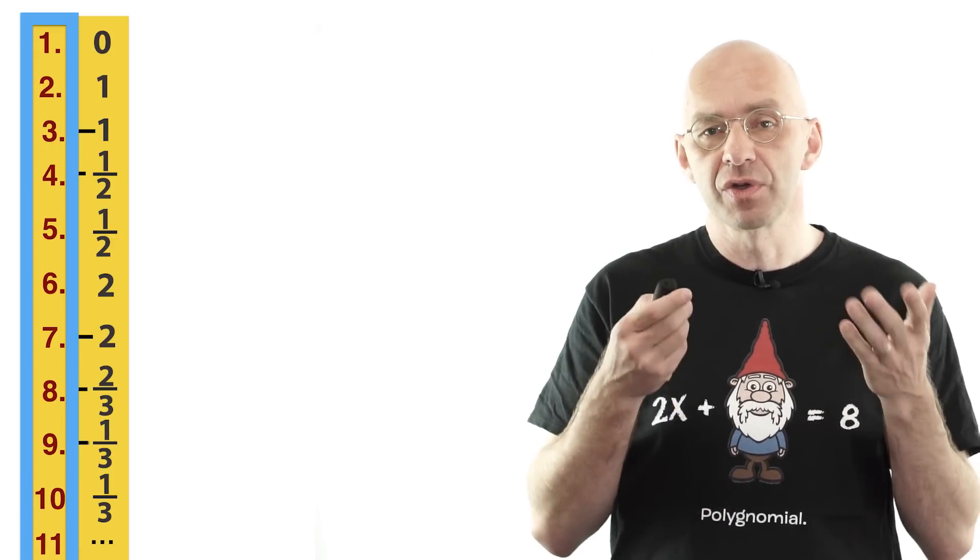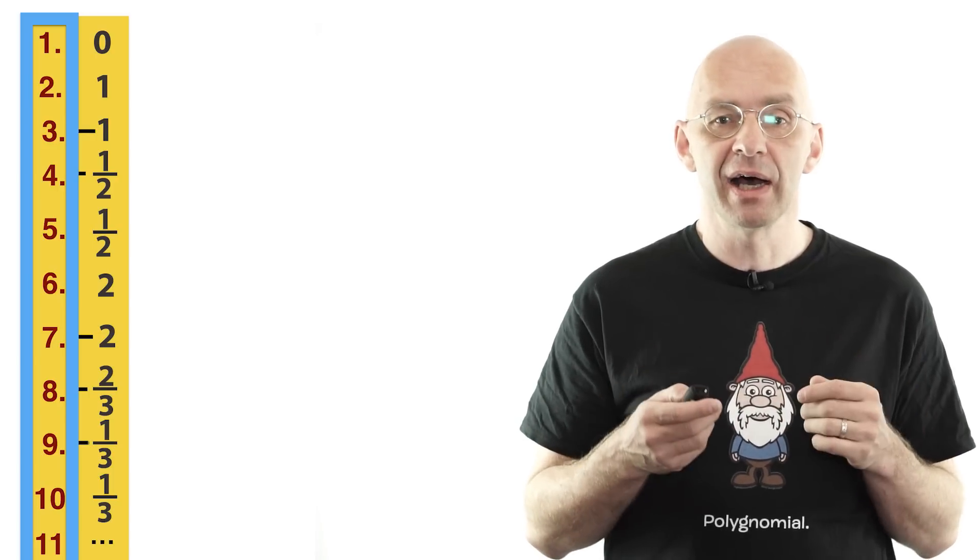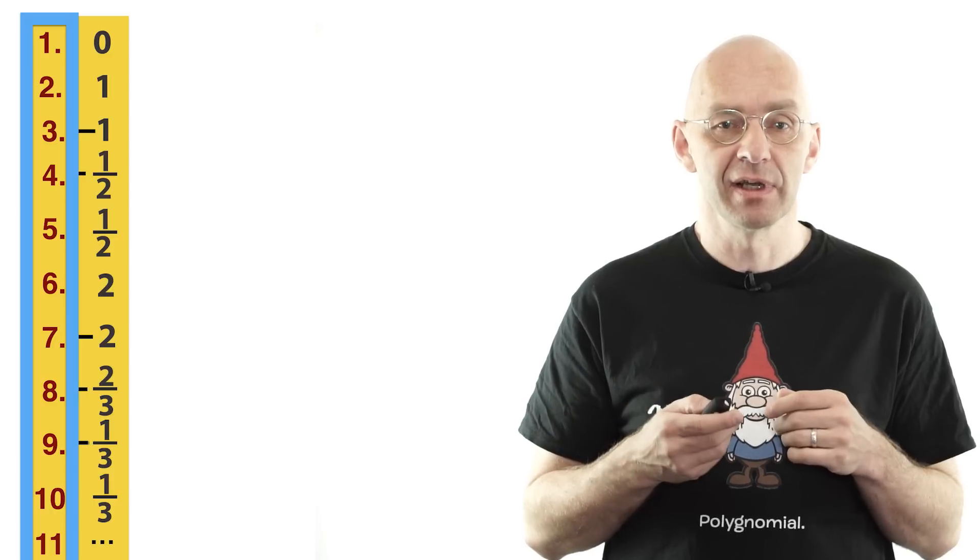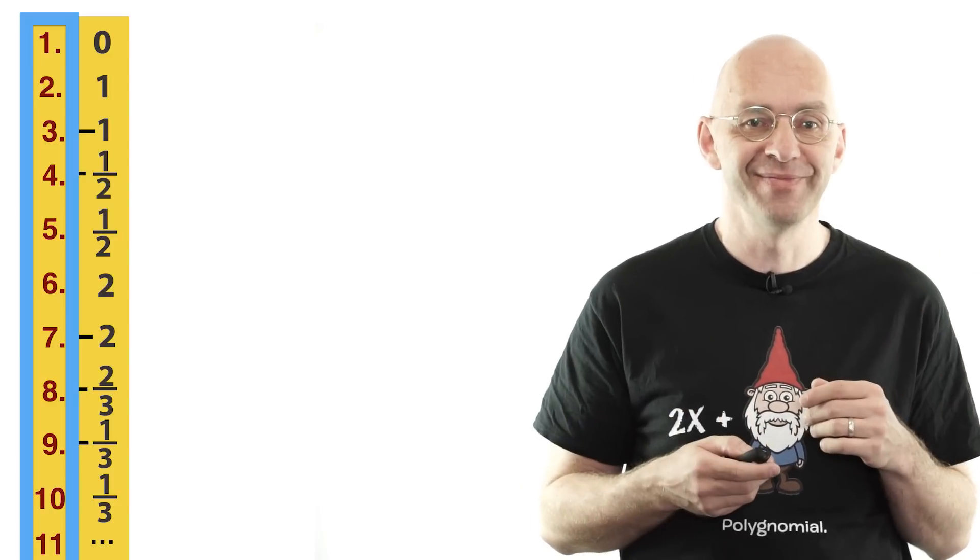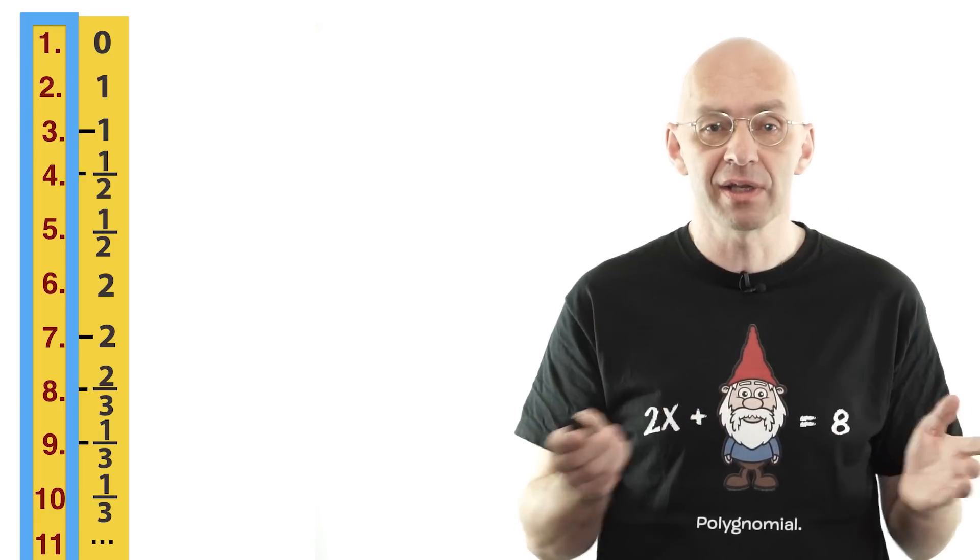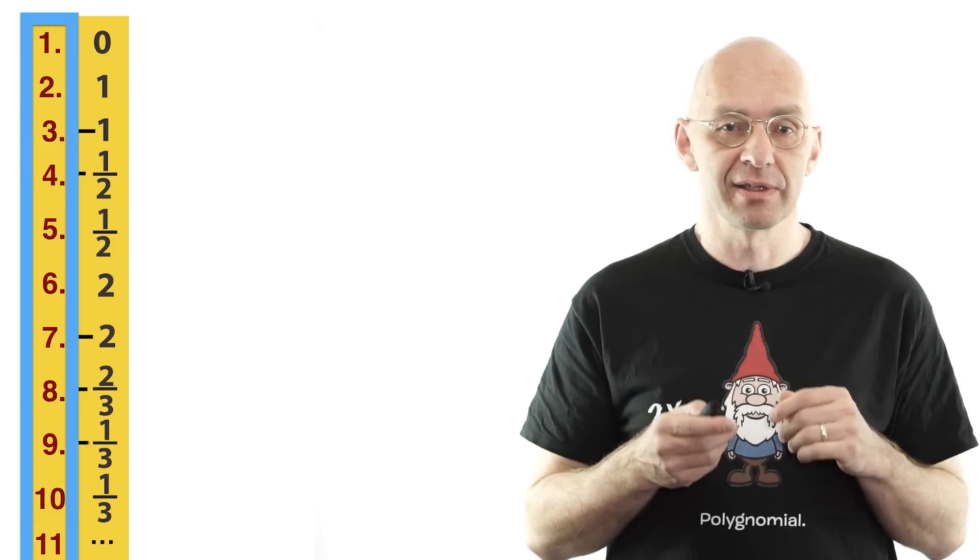And the thing is, and I'll show you in a second, the algebraic numbers are just like the rational numbers, countably infinite. This means party time. You can use Cantor diagonalization to construct a number that is not algebraic, a number that is transcendental.